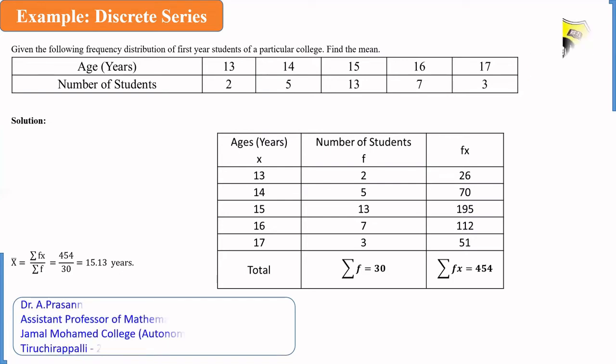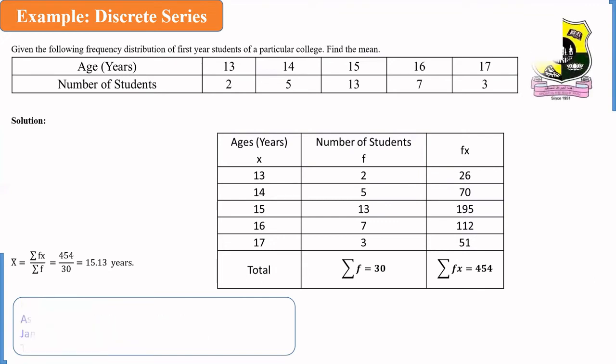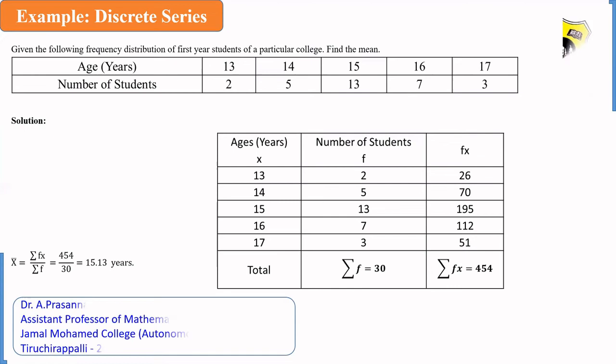Taking the total and dividing by total number of frequency, we get arithmetic mean. So, x̄, which is equal to summation of f into x divided by summation of f. Here, summation of f into x is 454. The frequency total is 30. So, 454 divided by 30, which is equal to approximately 15.13. Since x is ages in terms of years, we are writing the value of x̄, that is 15.13 years.